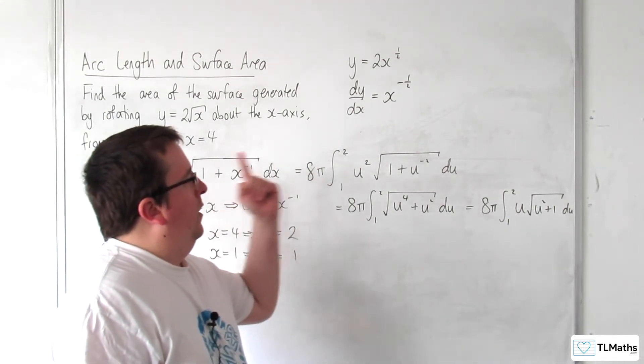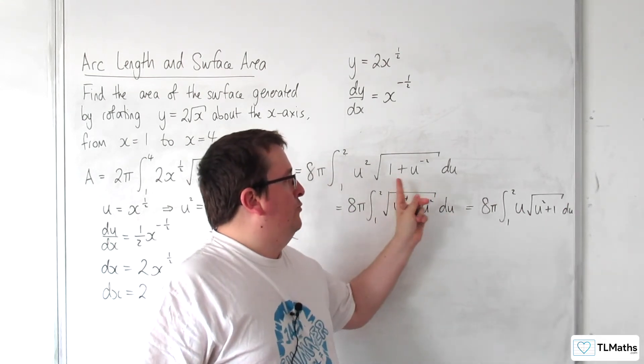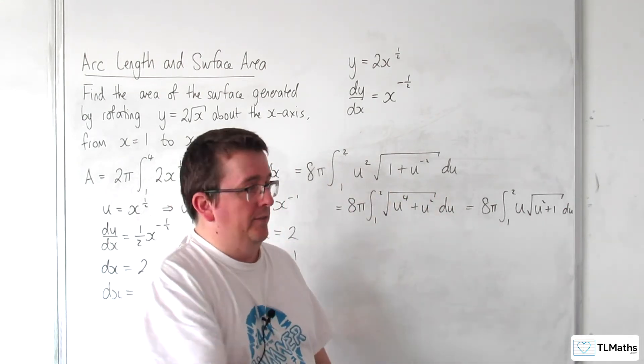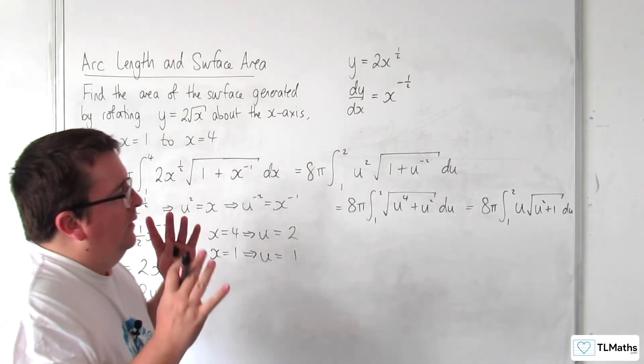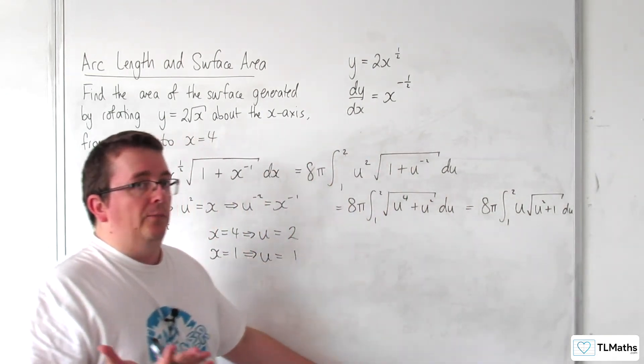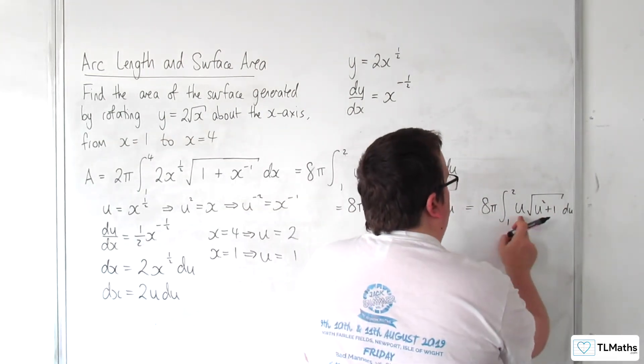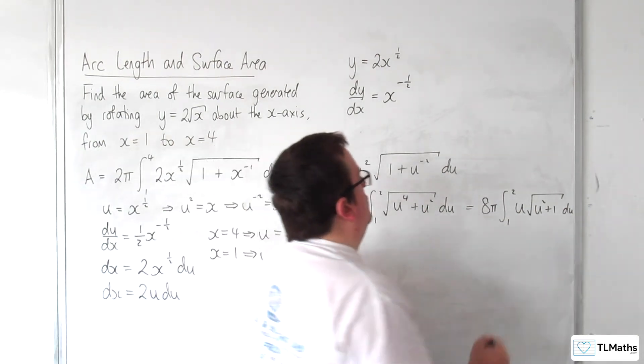I could have just factored in one of those u's and gone straight from there to there. We're left with this. Now this is much better for us, because u squared plus 1 differentiates to a multiple of u. So we can use reversing the chain rule here.